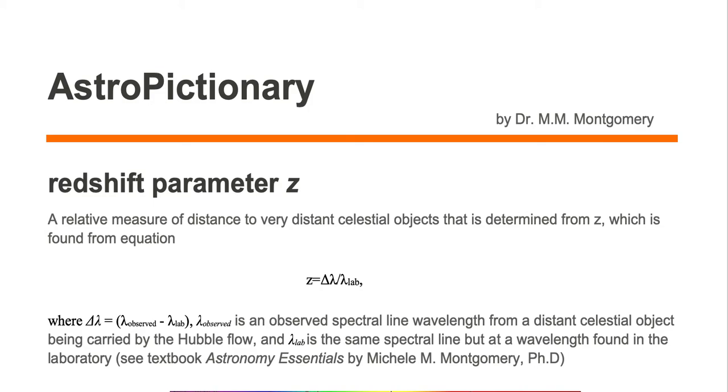Where delta lambda equals lambda observed minus lambda lab. Lambda observed is an observed spectral line wavelength from a distant celestial object being carried by the Hubble flow, and lambda lab is the same spectral line but a wavelength found in the laboratory.